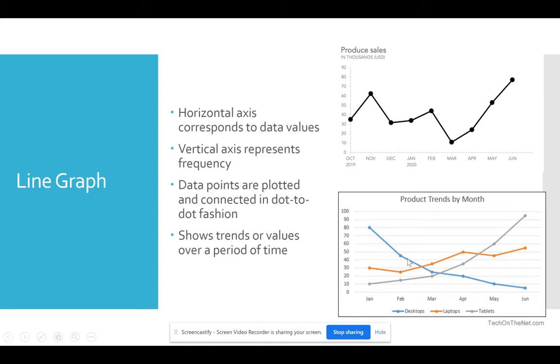You can also have multiple lines on the same graph. Again, you just need to provide the key or the legend. In this one, the blue line represents desktops, the orange is laptops, and the gray is tablets. And so it allows you to make a comparison between those three different type products from month to month and lets you see whether the trend was up or down or in relationship to one another. That one you see a lot in relationship probably to stocks or sales from month to month or year to year.